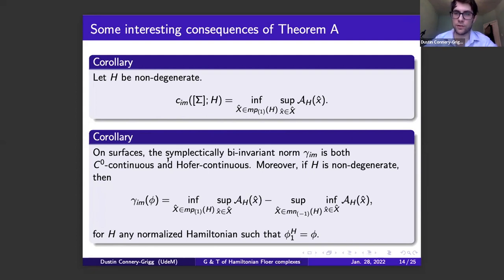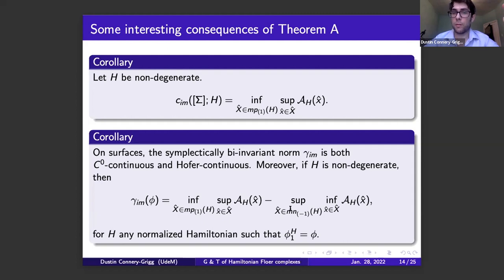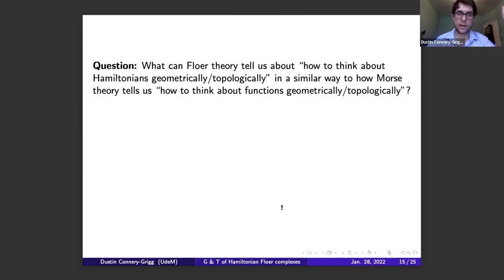As a corollary, you can define a norm with the spectral invariant in the usual analogous way, and you get a symplectically bi-invariant norm which is C^0-continuous — because the PSS spectral invariant is C^0-continuous on surfaces, thanks to an argument by Seyfaddini which adapts in a straightforward way using only the formal properties. When your Hamiltonian is non-degenerate, you can actually compute it entirely dynamically. Here MN^{−1} is the collection of maximally negative capped braids of relative index minus one.